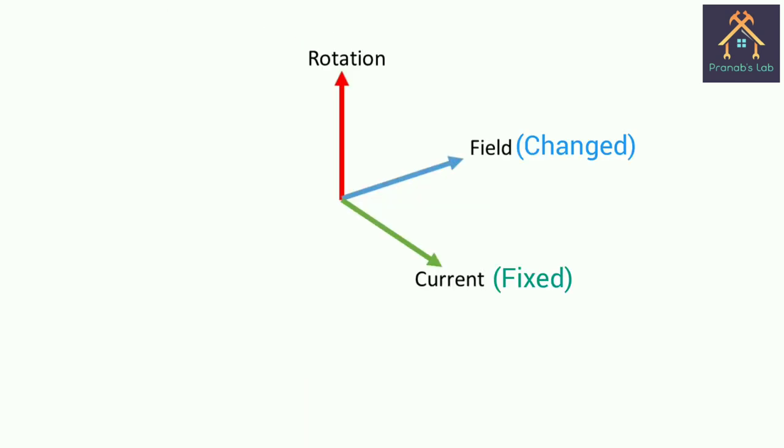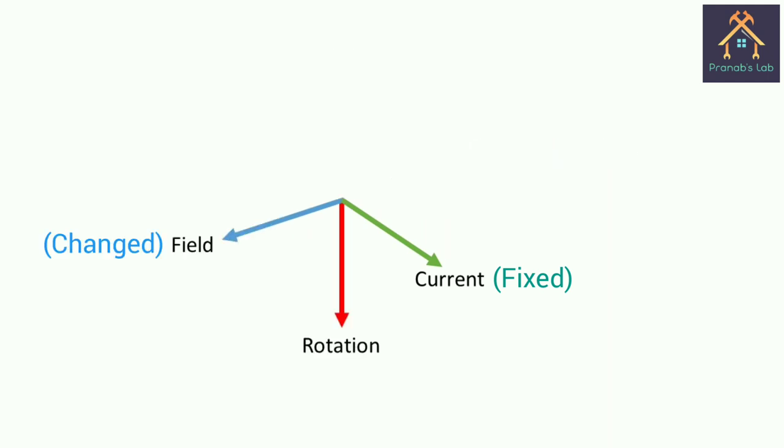Now, if we change the direction of field only and the direction of current through armature remains constant, then rotation will be reversed like this.